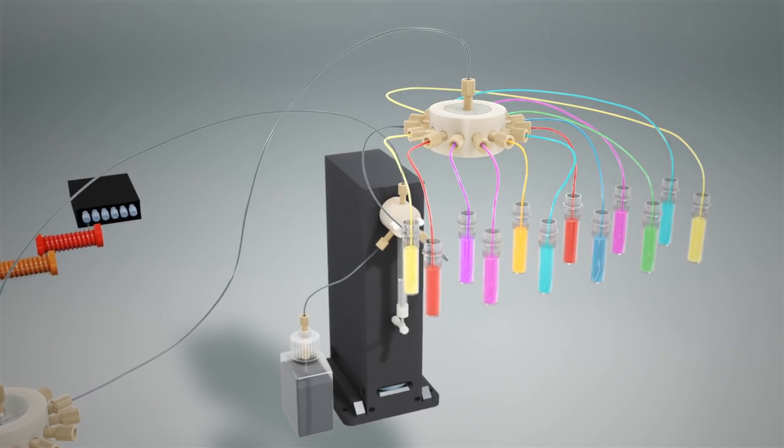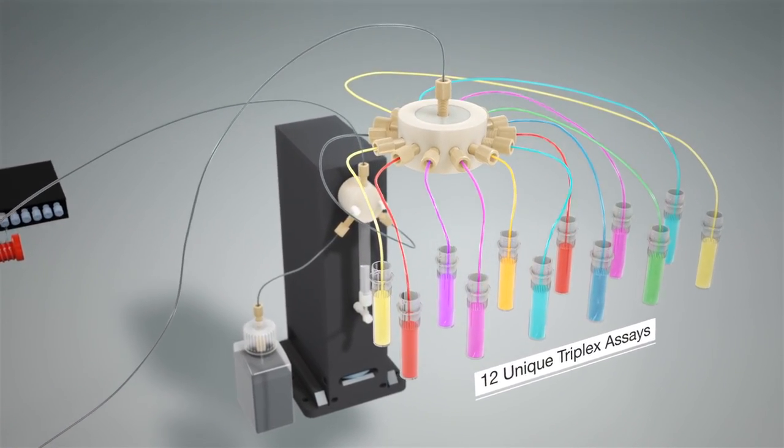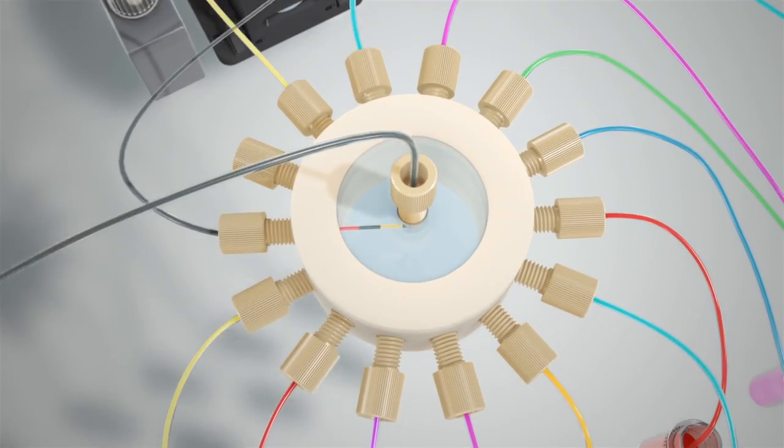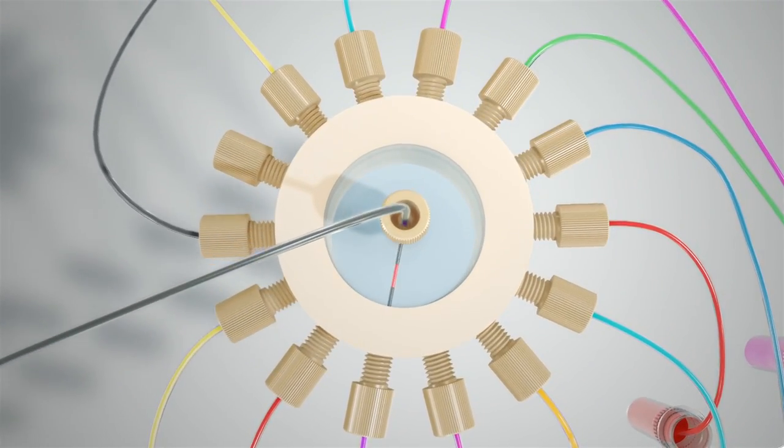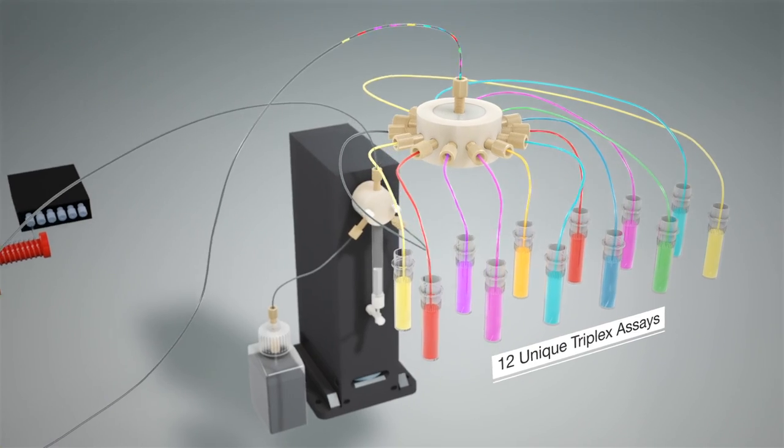The instrument then assembles 12 unique triplex assays that are kept separate by intervening oil slugs. Each triplex assay contains primers and probes for a positive control and two pathogen targets.